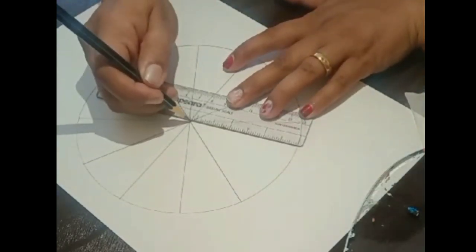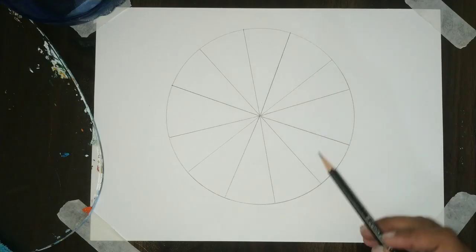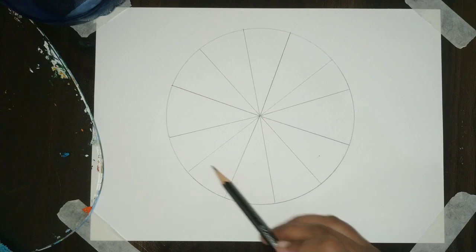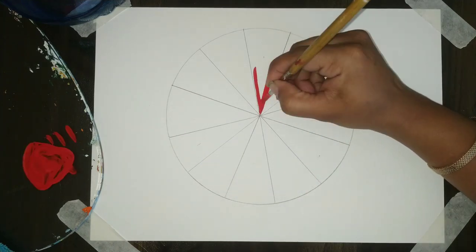We will divide my circle in 12 parts and after that we will label it. Leaving three space here, we will do a little bit of marking. Firstly, I will add a red color because red is my first primary color.